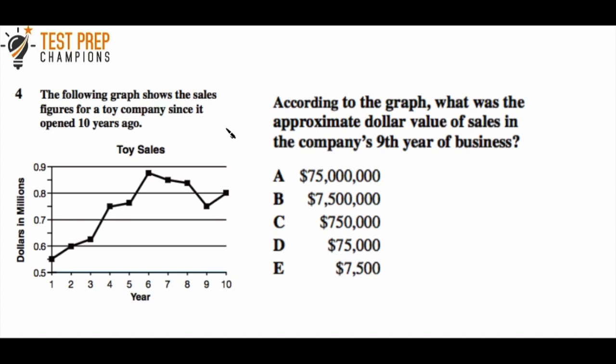Let's look at this question. On the graph's vertical axis, we see dollars in millions: 0.5, 0.6, 0.7. The horizontal axis shows years. We need to focus on year nine. If we trace this value over to the vertical axis, we see it corresponds to 0.75, because it's between 0.7 and 0.8.